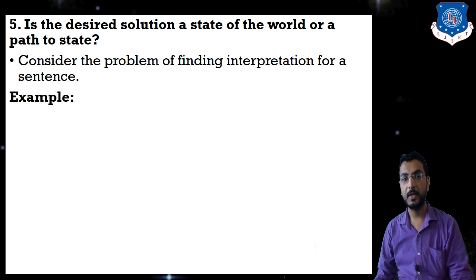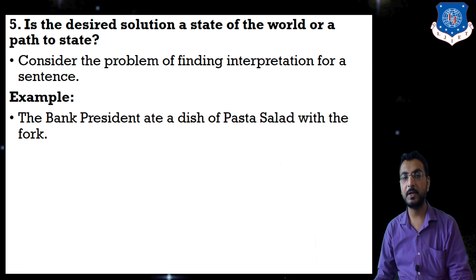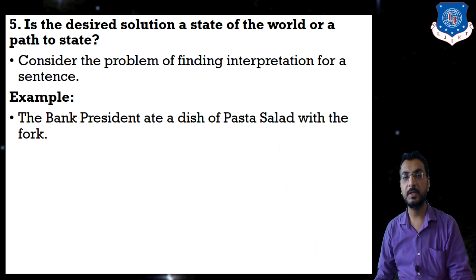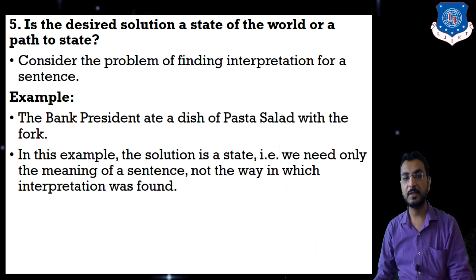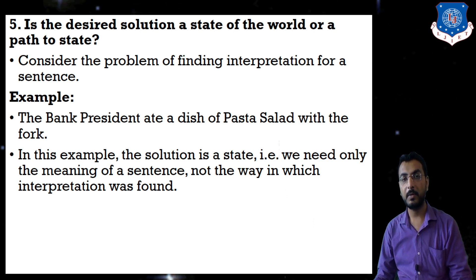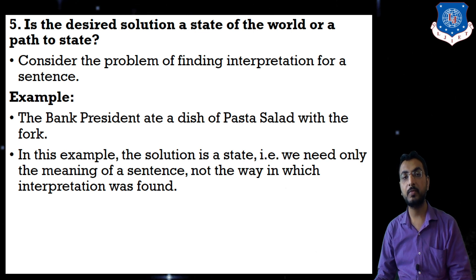Let's say the sentence is: 'The bank president ate a dish of pasta salad with a fork.' We want to interpret this sentence from natural language processing — English is the natural language here. In this example, the solution is a state: we need only the meaning of the sentence, not the way in which the interpretation was found. Directly we can interpret the sentence as our final answer without needing intermediate states to reach the final goal state.